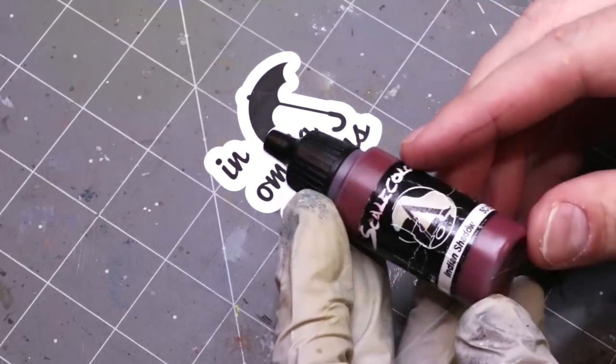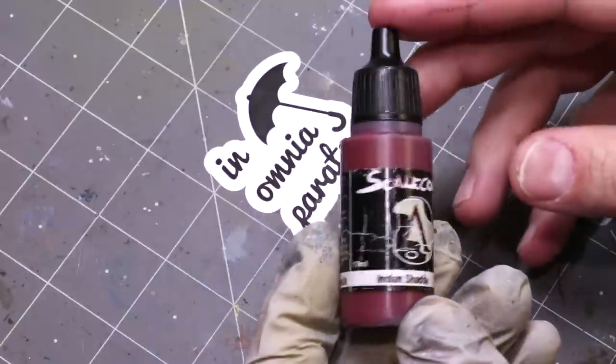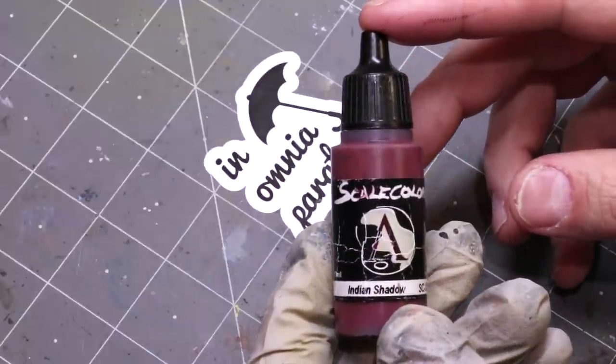We're going to stick to one color for that from one paint range, but these lessons apply to just about anything. Today I'm going to be using this Indian Shadow from Scale 75.